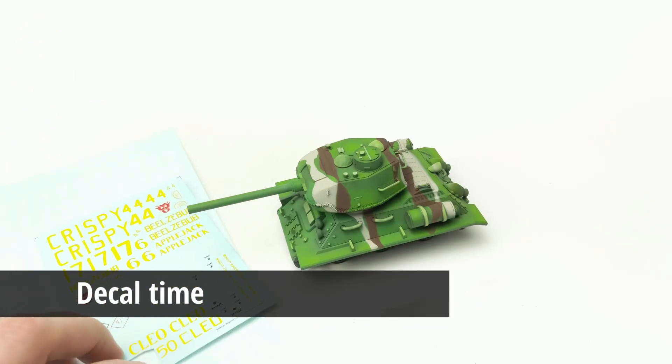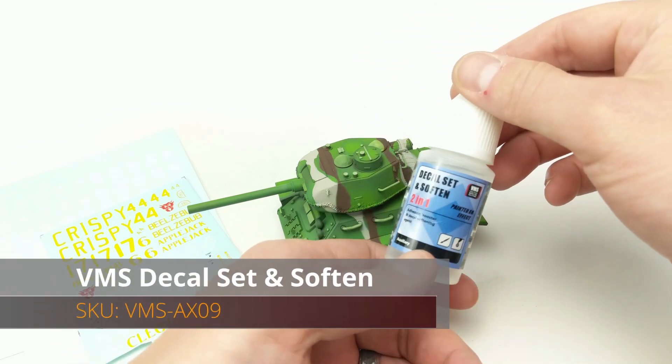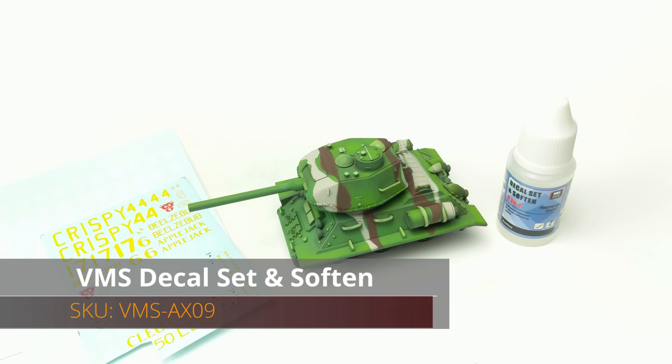With the camouflage out of the way, it was time to move on to adding decals. I actually decided to use a couple decals from a different kit I had, and I whipped out the VMS decal set and soften.